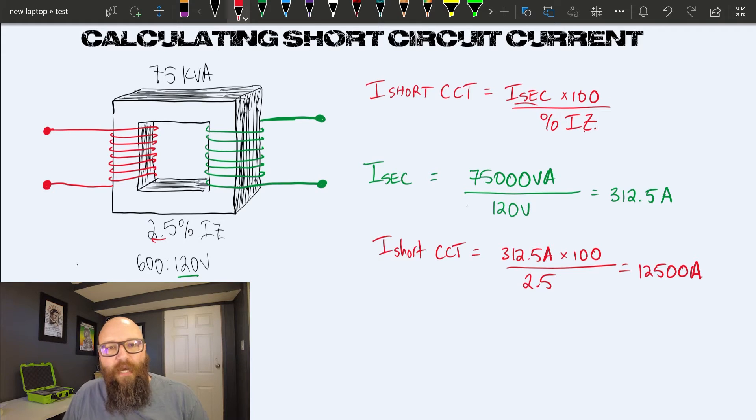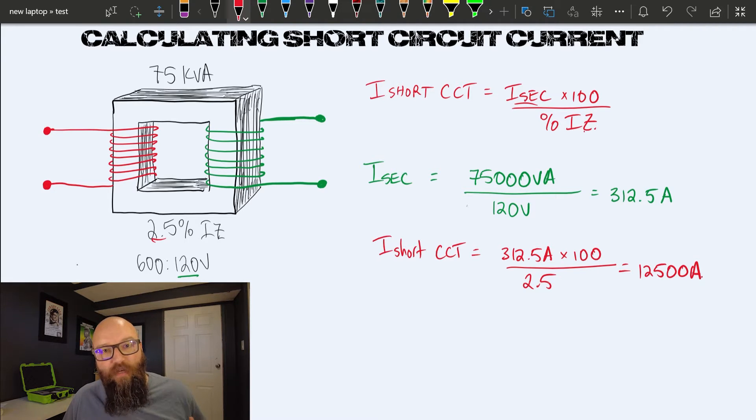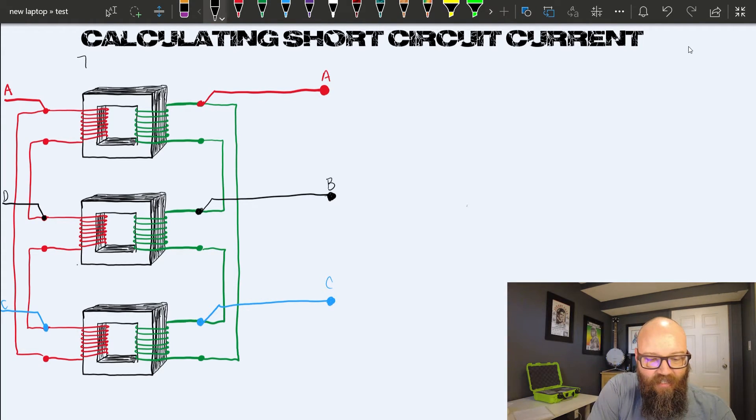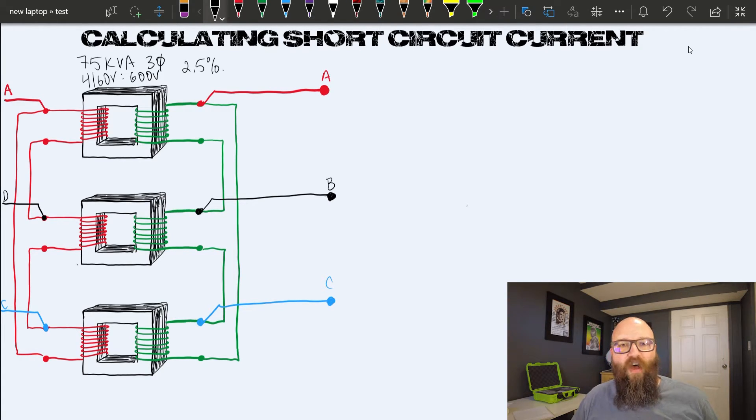Let's take this to a three-phase application. It's exactly the same formulas. The only difference is with the three-phase calculation, we need to be aware of when to use that root three number. Just like that, we've converted this to a three-phase bank of transformers. We're going to consider this one transformer with one total rating. This is a 75 kVA three-phase, 4160 primary volts stepped down to 600 volts on the secondary, with a 2.5% IZ.